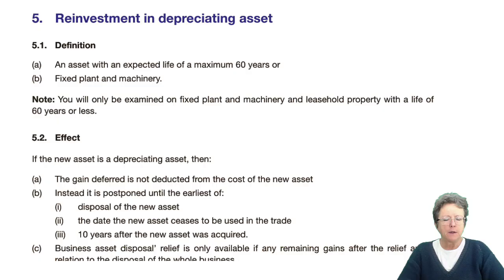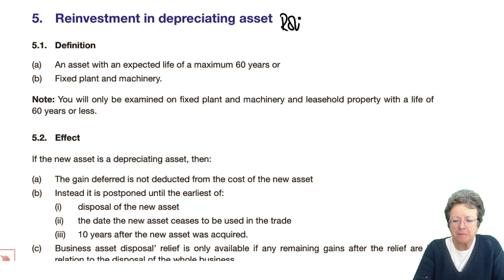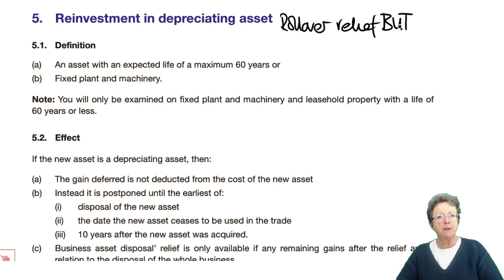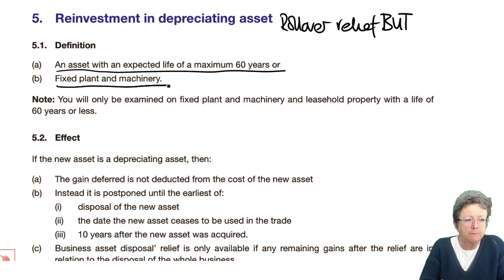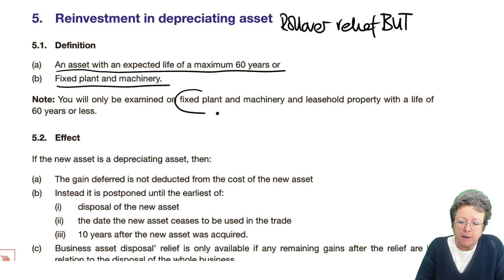Now we're going to look at rollover relief with a caveat attached to it. It's rollover relief, but this time we are reinvesting into a depreciating asset, which is defined as an asset with an expected life of a maximum of 60 years, or it could be plant and machinery. You will only be examined on fixed plant and machinery and leasehold property with a life of 60 years — nothing else.